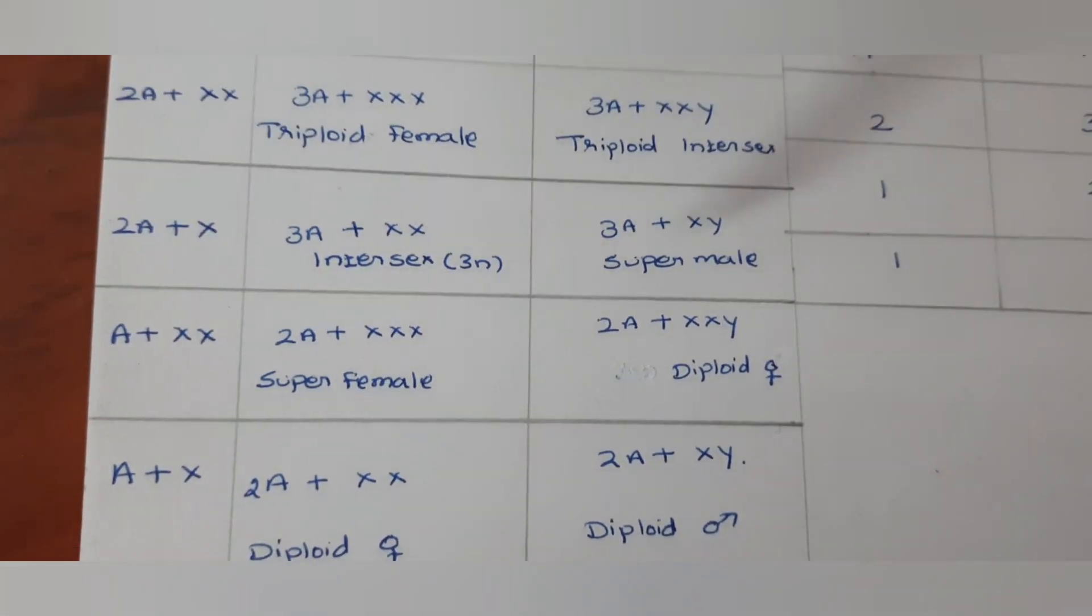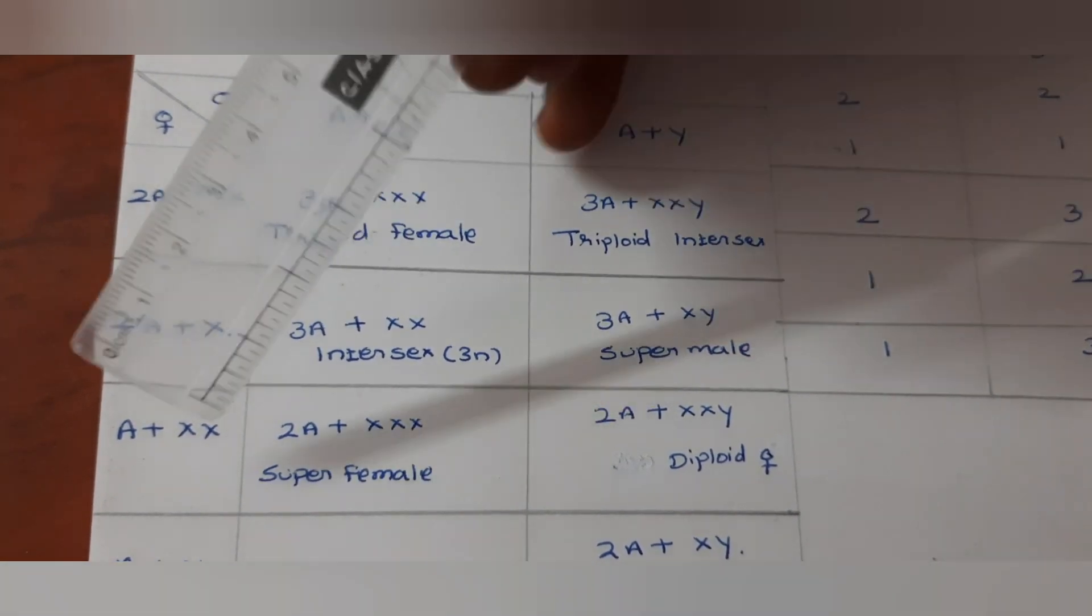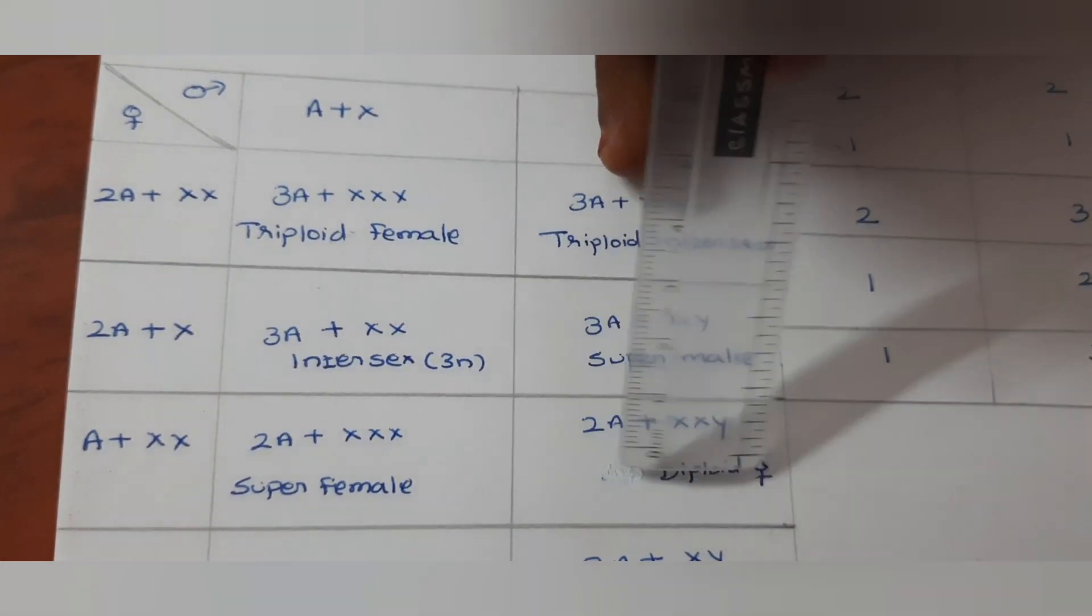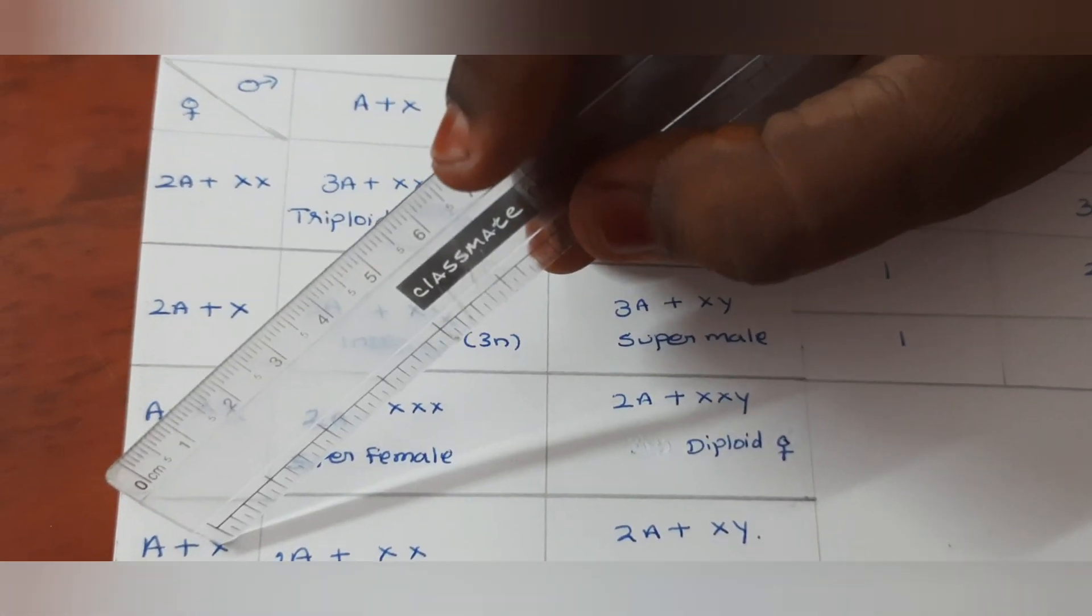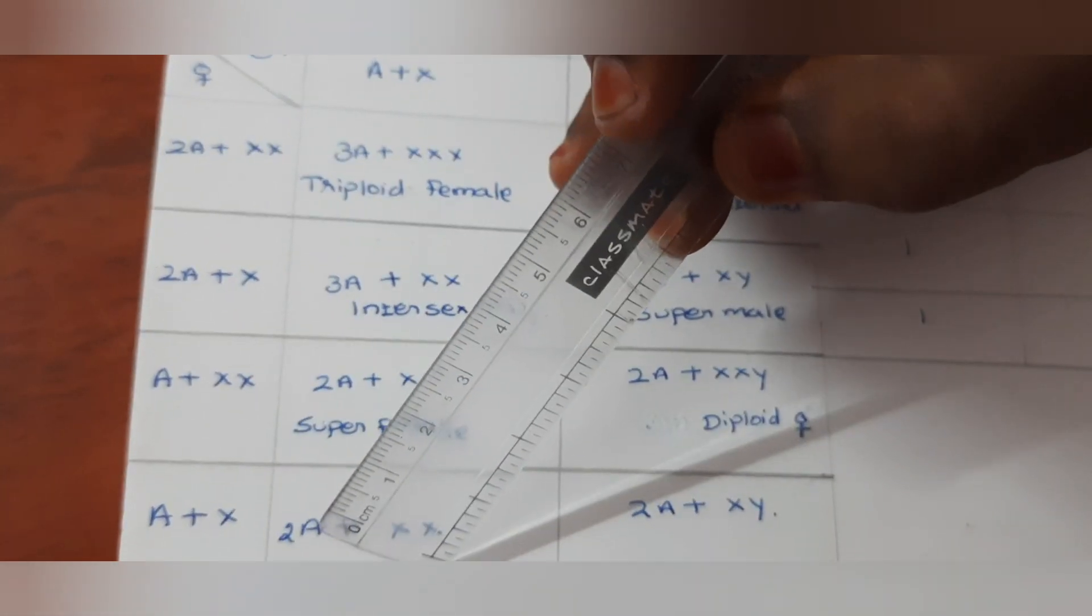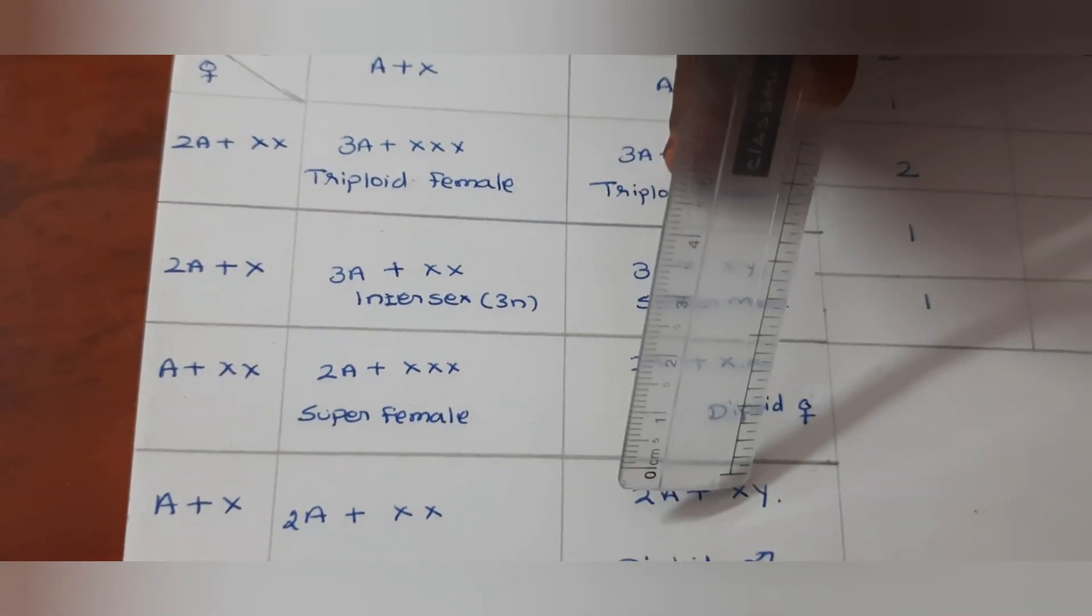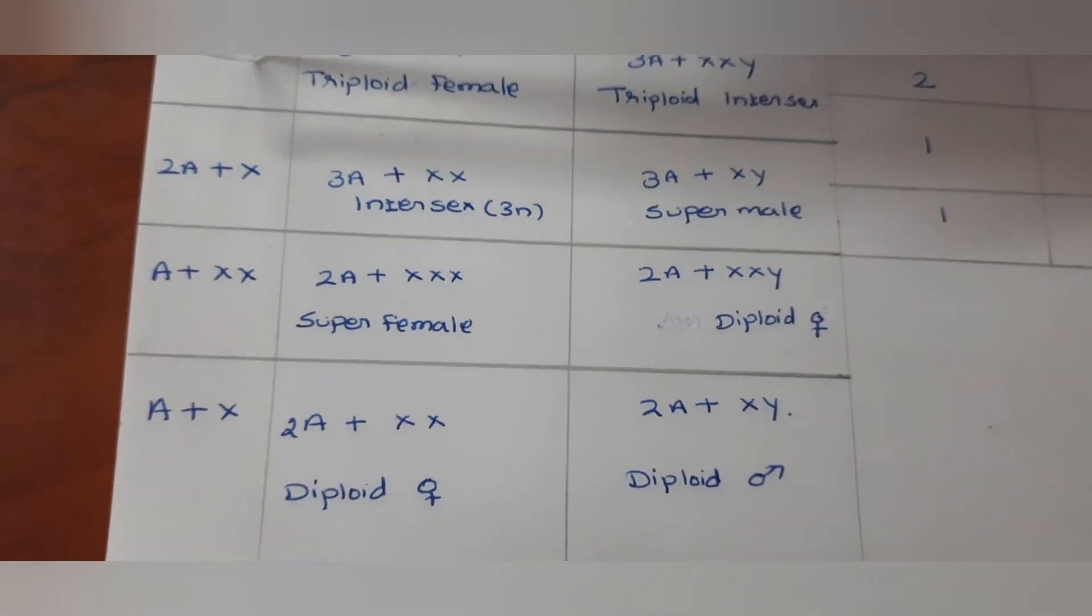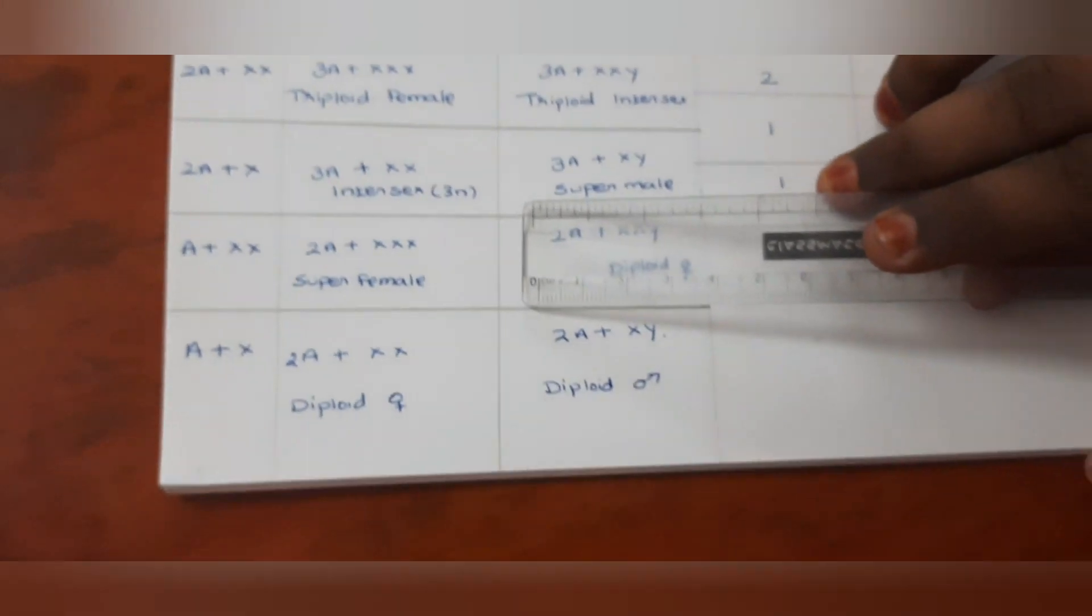And here A+XX, and A+XX into A+X into A+Y. You can see 2A+XXX super female. Diploid female. Now A+X into A+X gives 2A+XX, diploid normal female. In the same way A+X into A+Y gives 2A+XY, diploid male, that is normal male. In such a way the autosome and sex chromosome is balanced. This theory is called genic balance theory.